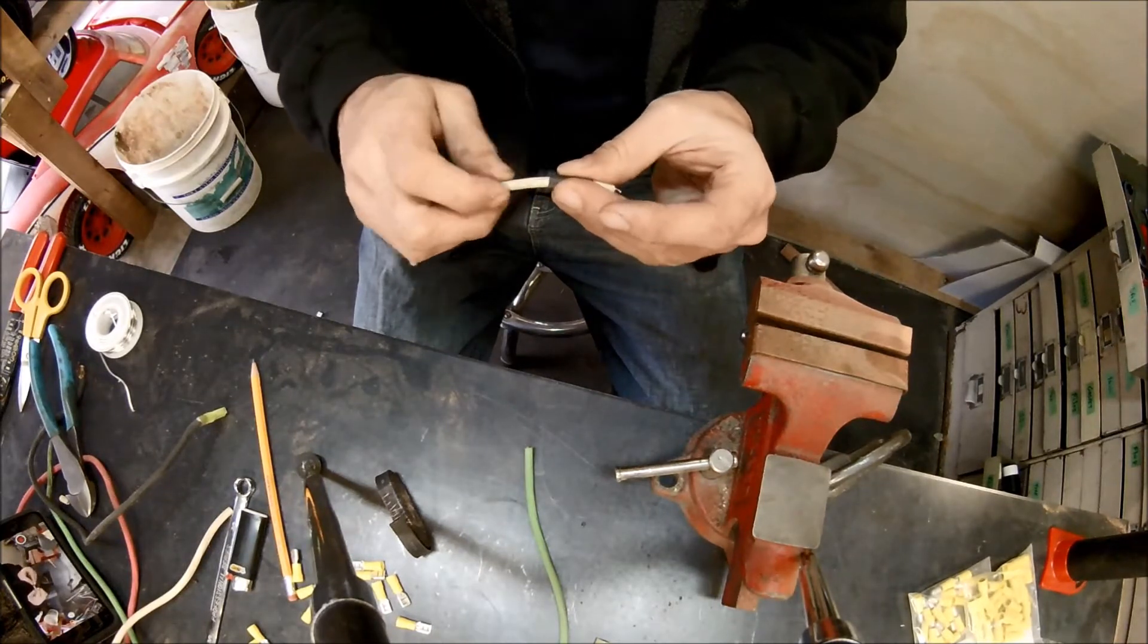So we just cut off the section that we want, the length desired. It's collapsed so I'm going to open it up with a pencil just so it's easy to insert the wire.